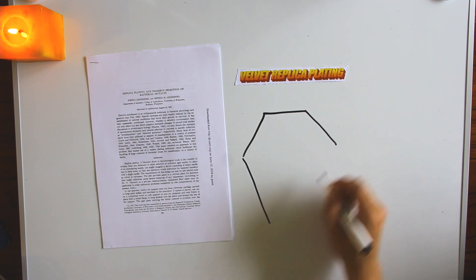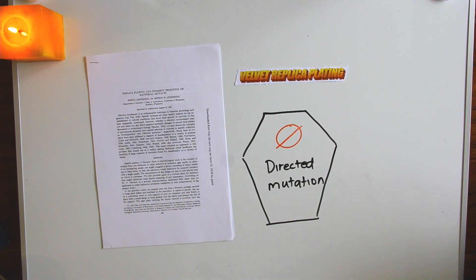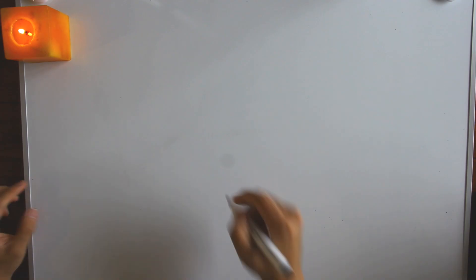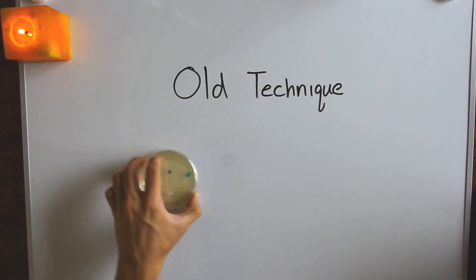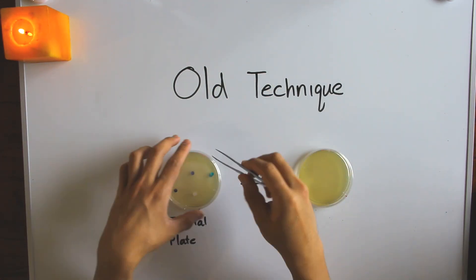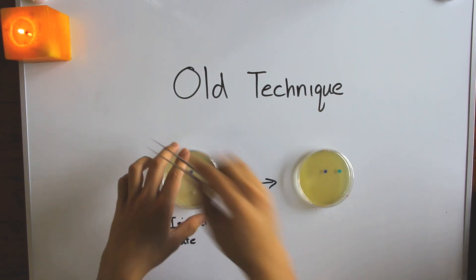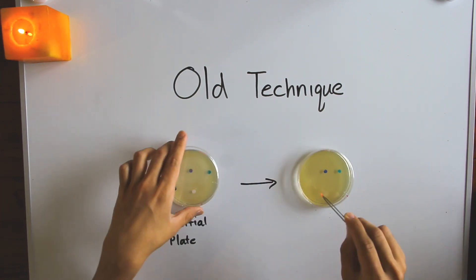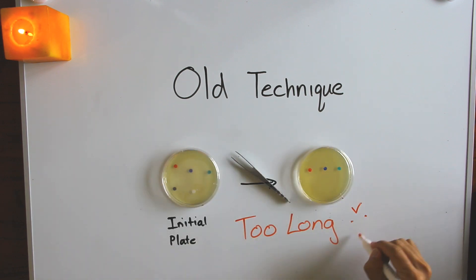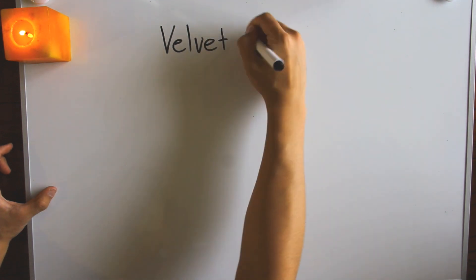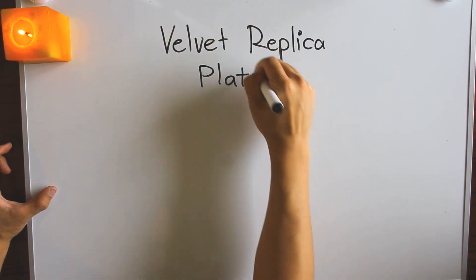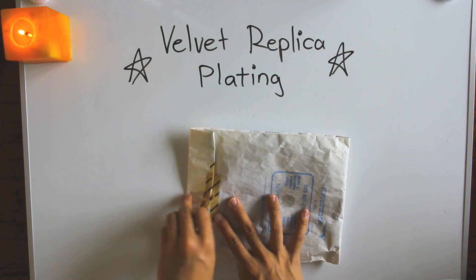But it was Josh and Esther who really put the nail in the coffin by developing the replica plating technique. Before explaining the Lederbergs' experiments, it's important to understand what replica plating is first and why it was such a breakthrough in experimental design. You used to have to move bacteria colonies from one plate to another, one by one, but this took way too long. So naturally, Joshua and Esther had to invent velvet replica plating so all the colonies on a plate could be moved simultaneously.